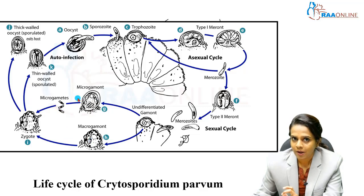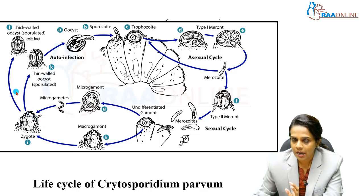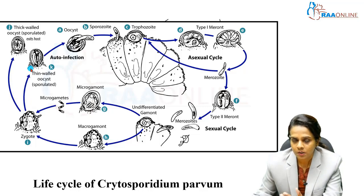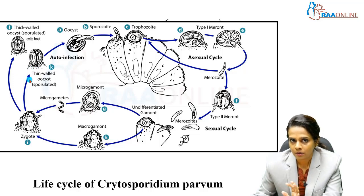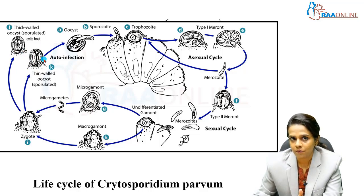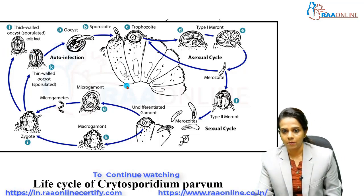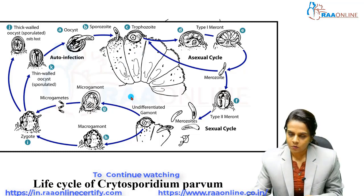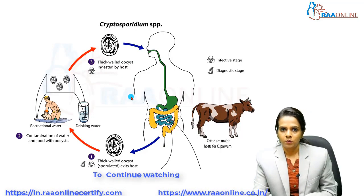Fertilization takes place between the microgamete and macrogamete, resulting in zygote formation. The zygote undergoes sporogony — first unsporulated oocysts form, which are then transformed into sporulated oocysts containing sporozoites inside the thin and thick walled oocysts. These thin and thick walled oocysts are the infective form and the diagnostic form in Cryptosporidium species infection. This is all about the life cycle of Cryptosporidium species.